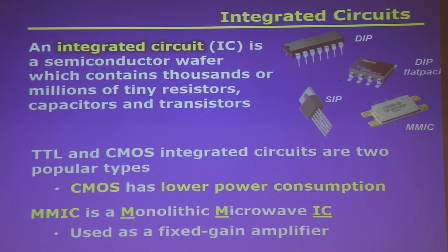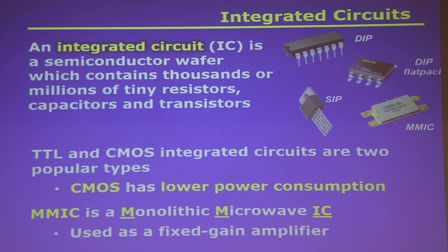All this stuff is inside integrated circuits. Integrated circuits are a semiconductor wafer — a piece of semiconductor material that has a whole bunch of microscopic circuits and components all embedded on it. Thousands or millions of tiny transistors and resistors, even smaller than discrete components. Your CPUs, radios, and computers are all on integrated circuits now.